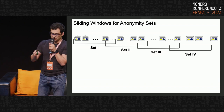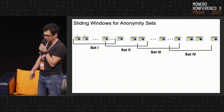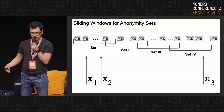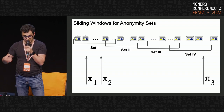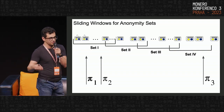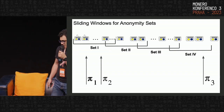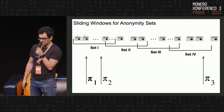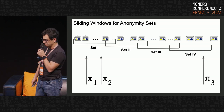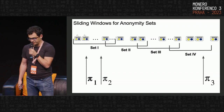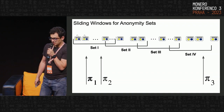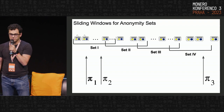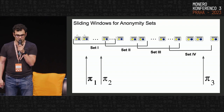The anonymity sets follow each other in this overlapping fashion, and each spend proof must explicitly refer to a concrete anonymity set. For example, the first two proofs here refer to the first set, and another proof refers to the fourth anonymity set. This is also important for optimizing the verification of transactions.